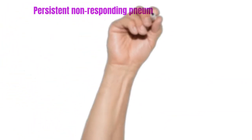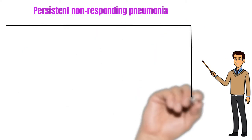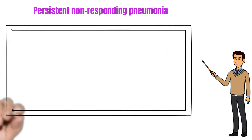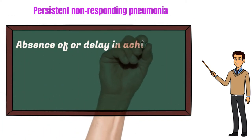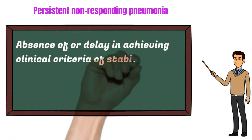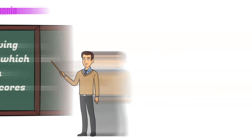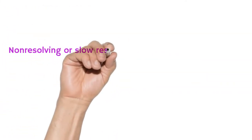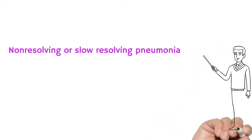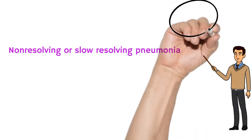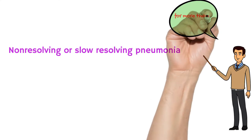Second, persistent non-responding pneumonia: absence of or delay in achieving clinical criteria of stability, which is seen in patients with high pulmonary severity index scores. Third, non-resolving or slow-resolving pneumonia: those who present with persistence of pulmonary infiltrates for more than 30 days.